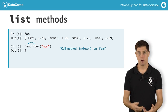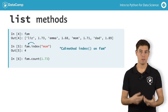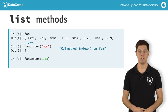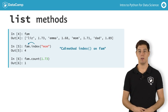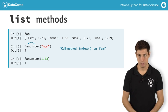Similarly, I can use the count method on the fam list to count the number of times 1.73 occurs in the list. Python gives me 1, which makes sense, because only list is 1.73 meters tall.